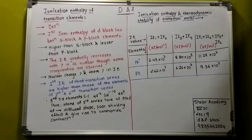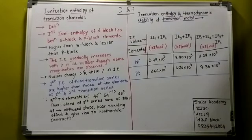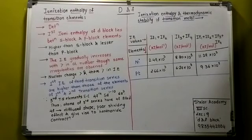Ionization enthalpy and the thermodynamic stability of the transition metals. Looking at the values for the first and second ionization enthalpies: nickel in the plus 2 oxidation state is more stable than platinum in the plus 2 oxidation state. The reason is that if you add the first and second ionization enthalpies for nickel, you will find it is less than that of platinum. So it implies that it requires less energy to form Ni²⁺ than to form Pt²⁺, and that determines thermodynamic stability for elements in the plus 2 oxidation state.